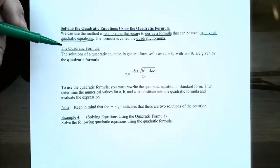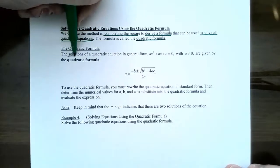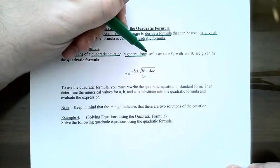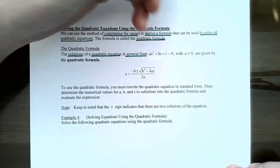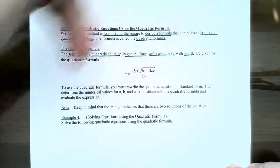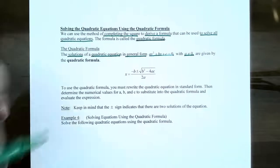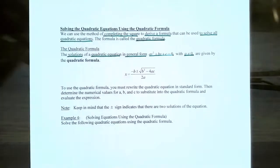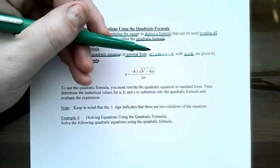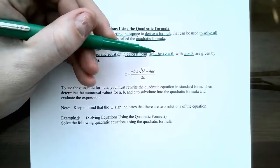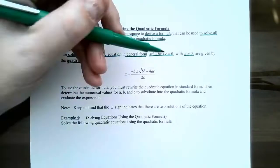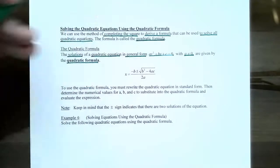The quadratic formula gives the solutions from a quadratic equation. The equation must be in general form to use the quadratic formula, and the coefficient a cannot be zero — if a were zero, it would no longer be a quadratic equation. Once you have the equation in general form, you can identify the coefficients: a is the coefficient in front of x squared, b is the coefficient of x, and c is the constant term.